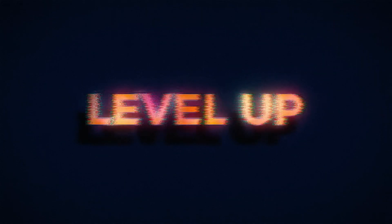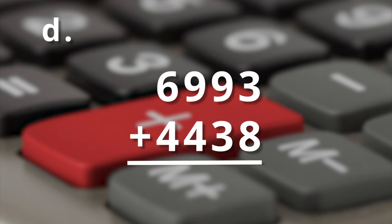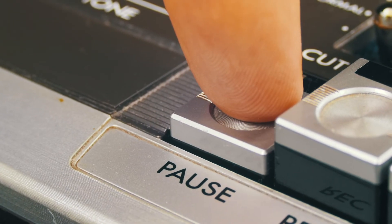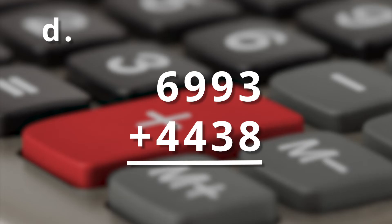Alright, let's move up a level. Example D. We've got six thousand nine hundred ninety-three plus four thousand four hundred and thirty-eight. Pause the video and see if you can do this one on your own. I'll wait. Welcome back!